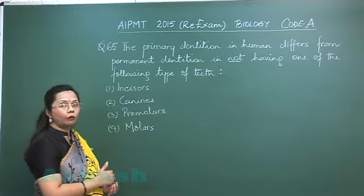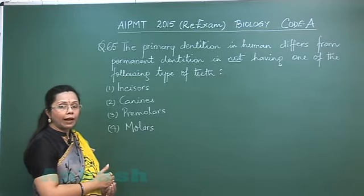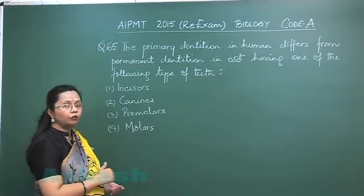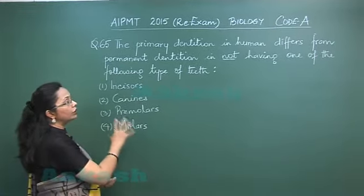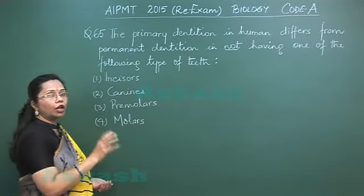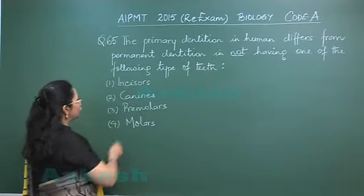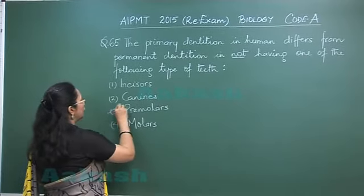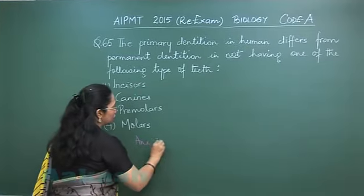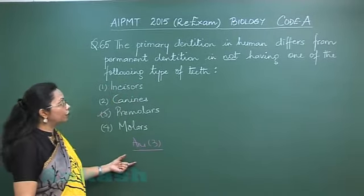The difference comes from the premolars, because premolars are absent from milk dentition. The third molar is also absent, but considering type entirely, premolars are totally absent from the primary dentition. So our answer is option 3, premolars.